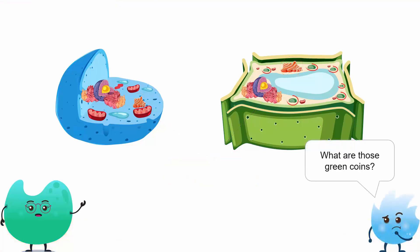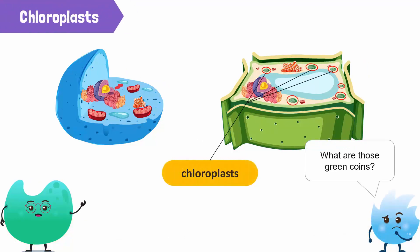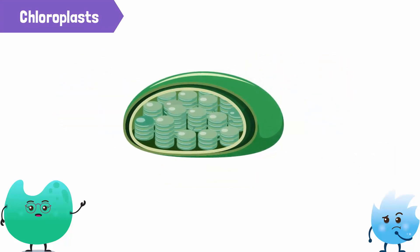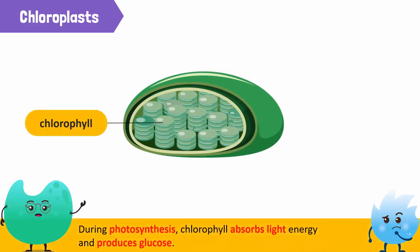What are those green beans in the plant cell? Those are chloroplasts. Chloroplasts are found only in plant cells and contain a green pigment called chlorophyll. Chlorophyll absorbs light energy and allows photosynthesis to take place.